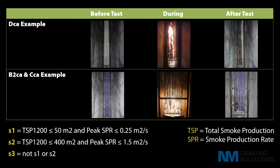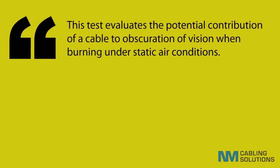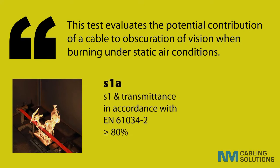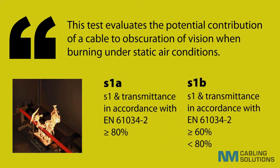Lastly, S3 is very simple — it does not meet either S1 or S2. To clear up any confusion: if you pass S1, you can then opt to add an additional test to establish what is termed transmittance. This test is not new to us and we've been using it for a number of years to qualify an LS0H cable, and it is related to smoke opacity or density.